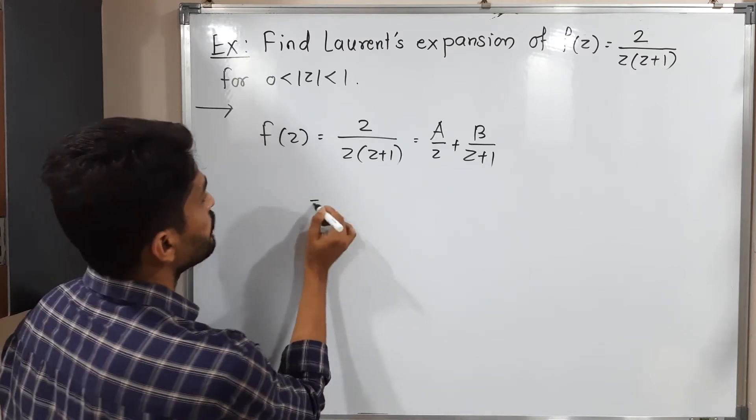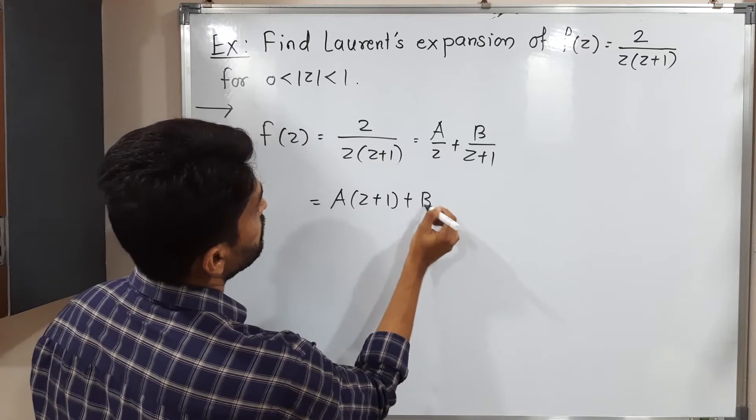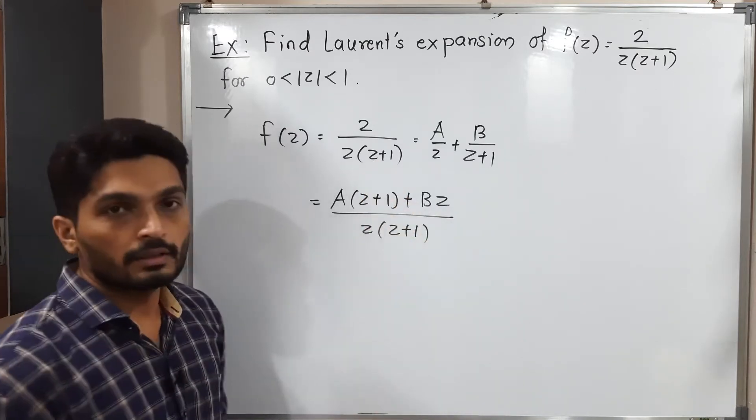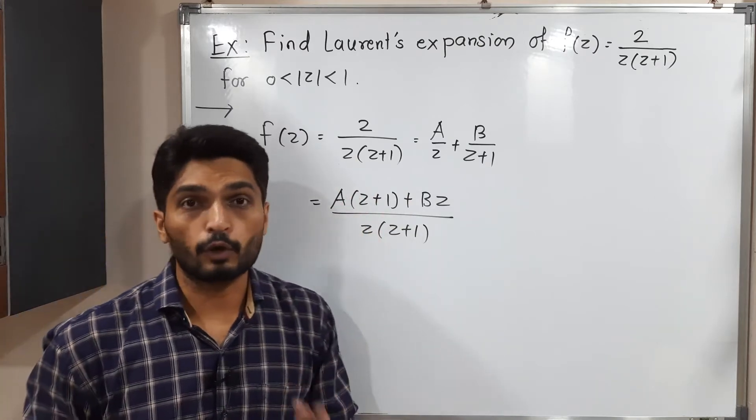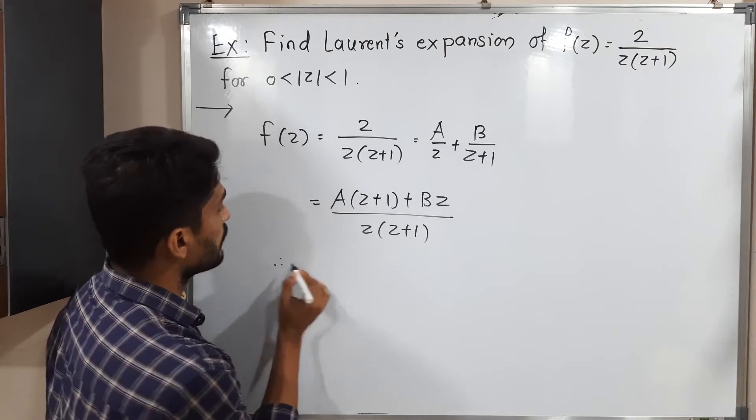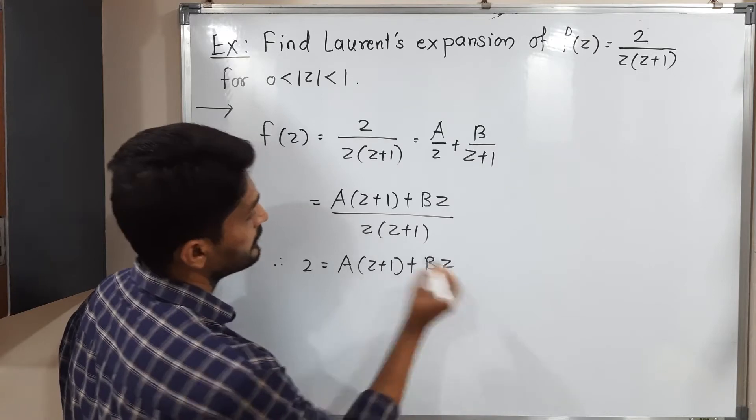Let us cross multiply. A times z plus 1 plus B times z divided by z times z plus 1. Both have the same denominator, so we can cancel and simply equate numerators. Therefore, 2 equals A times z plus 1 plus B times z.